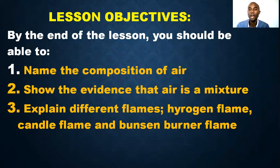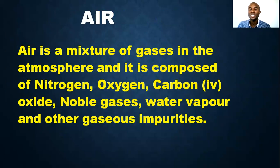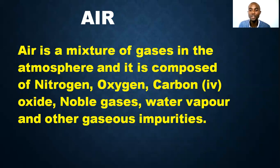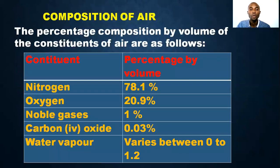What is air? Air is a mixture of gases in the atmosphere and is composed of nitrogen, oxygen, carbon dioxide, noble gases, water vapor, and other gaseous impurities. So the air around us is made up of several things — oxygen, nitrogen, carbon dioxide, noble gases, water vapor, and other impurities — meaning that air is not pure.